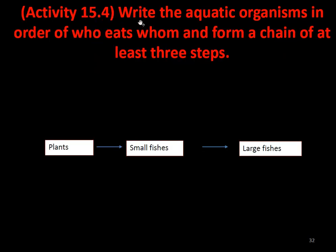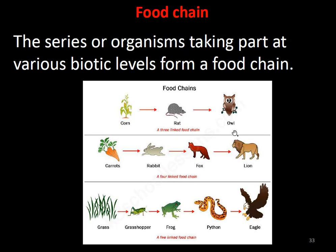Let us write aquatic organisms in order of who eats whom to form a food chain. Plants are eaten by small fish, and small fish are eaten by large fish. A food chain is a series of organisms taking part at biotic levels. For example, a three-linked food chain: corn is eaten by rat, and rat is eaten by owl. A four-linked food chain: carrot is eaten by rabbit, rabbit is eaten by fox, and fox is eaten by lion.